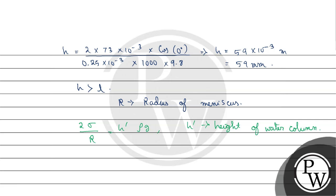All values are given, so we will put the values. We get 2 multiplied by 73 multiplied by 10 to the power minus 3 divided by R equals 25 multiplied by 10 to the power minus 3 multiplied by 1000 multiplied by 9.8. After solving, we get the radius of meniscus capital R equals 0.59 multiplied by 10 to the power minus 3 meter.